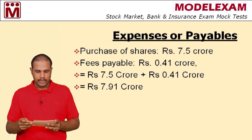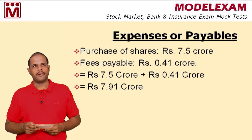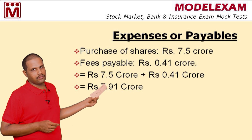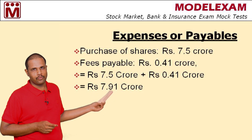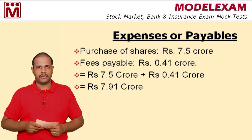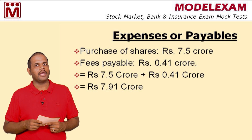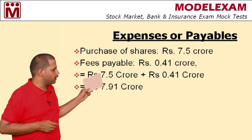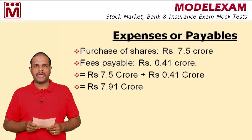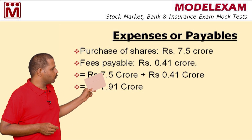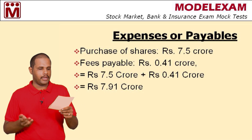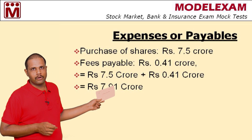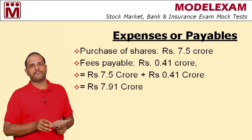Next are expenses, payables, or liabilities. Purchase of shares is Rs. 7.5 crore — when we buy a share, we must pay for it, so it becomes a payable. Fees payable is Rs. 0.41 crore. The total liability is therefore Rs. 7.91 crore. Now let us put all these together in our formula.